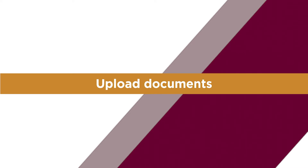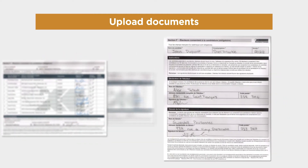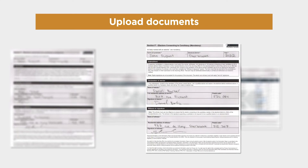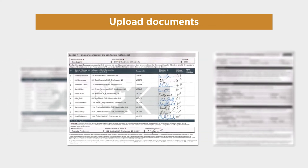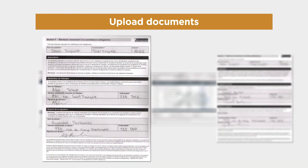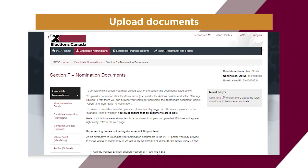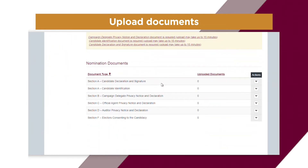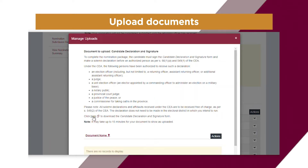Next, you must upload the completed supporting documents. Please note that while files can be uploaded as images or PDFs, most must be printed and signed in wet ink. Specific details are included on each form. It might take up to 15 minutes for a document to register as having been uploaded. To upload your documents, in the Nomination Documents section, click on the chevron under the Actions column and select Manage Uploads. From here, you can download a blank form and upload a completed form.